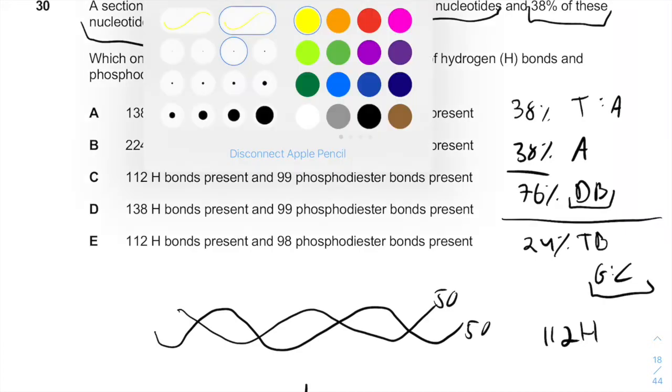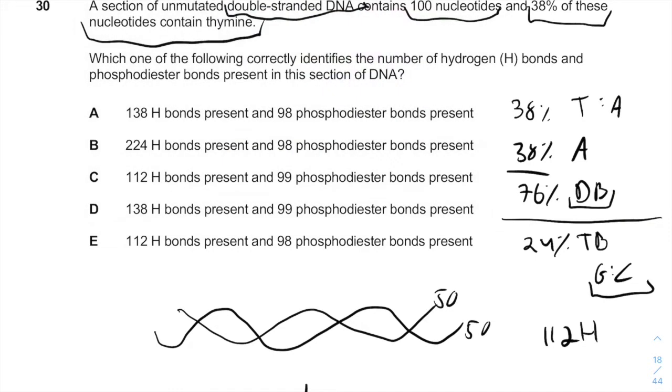And the general equation for it is just the number of nucleotides minus 1 will give you the amount of phosphodiester bonds you have in the molecule. Because we have double-stranded DNA with 2 50-nucleotide sequences, we will have 98 phosphodiester bonds and 112 hydrogen bonds. Here is our answer. Thank you.